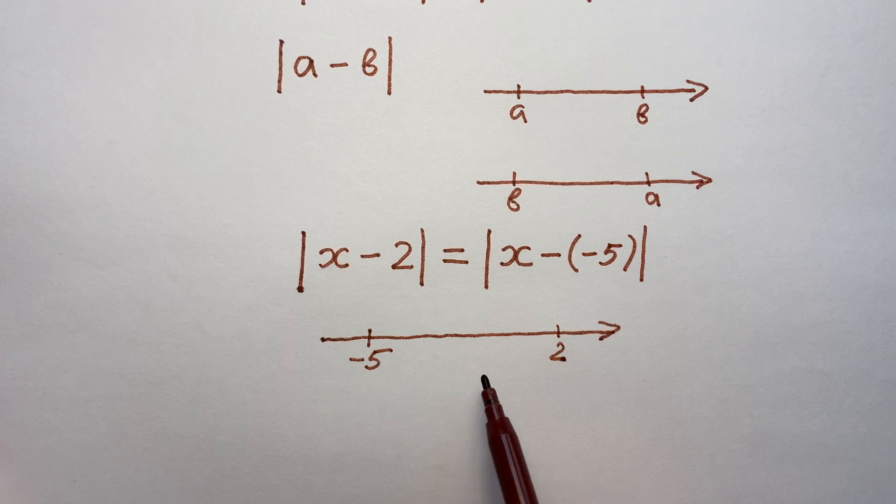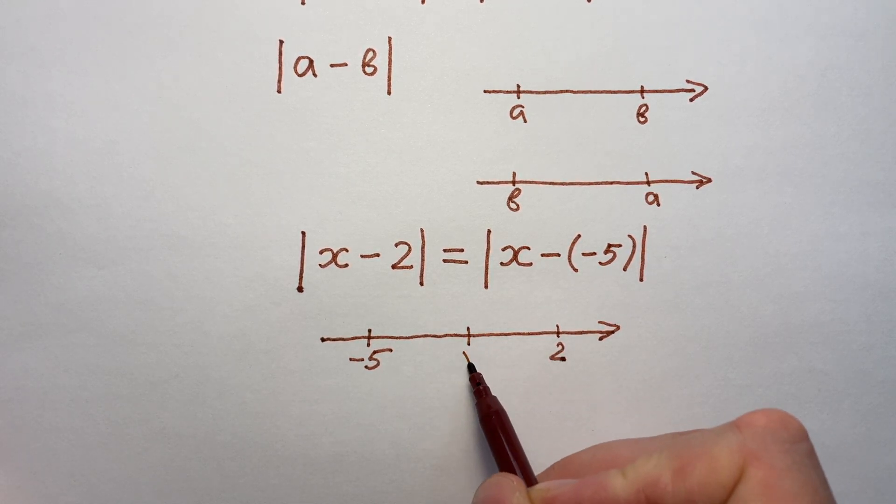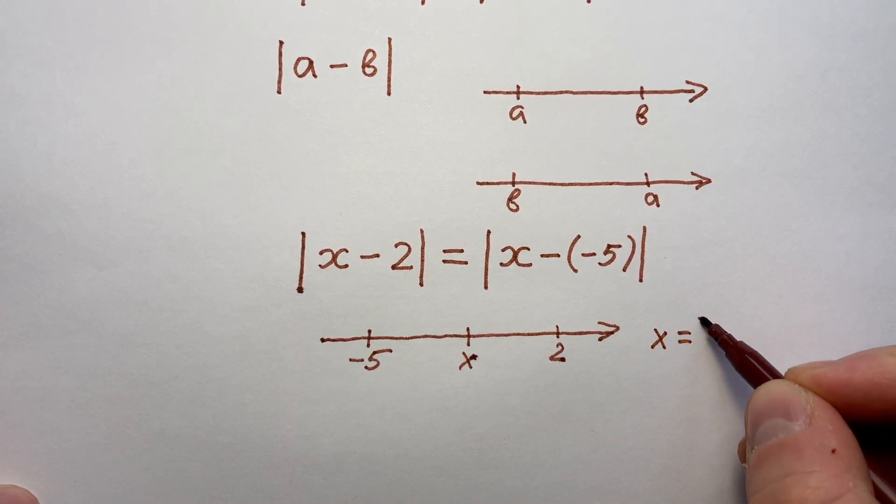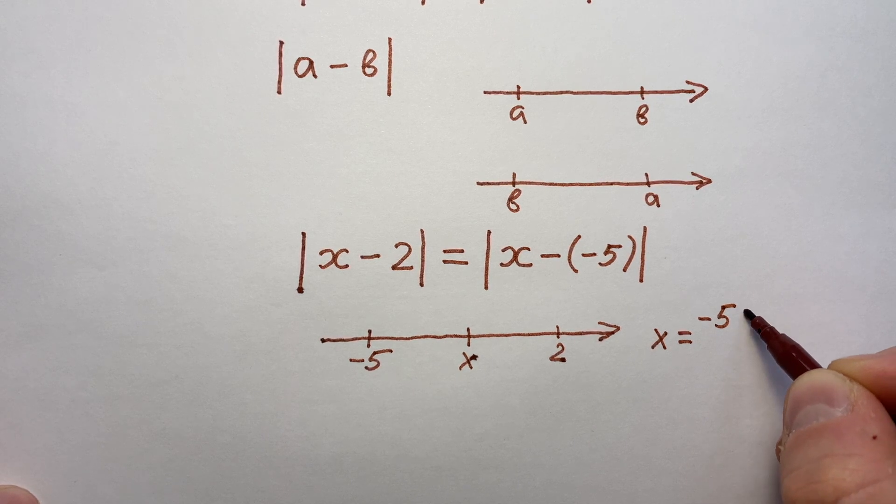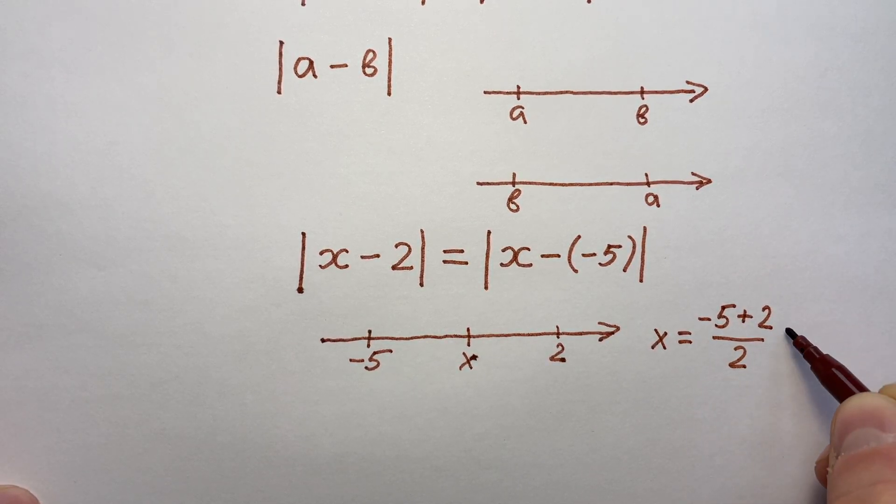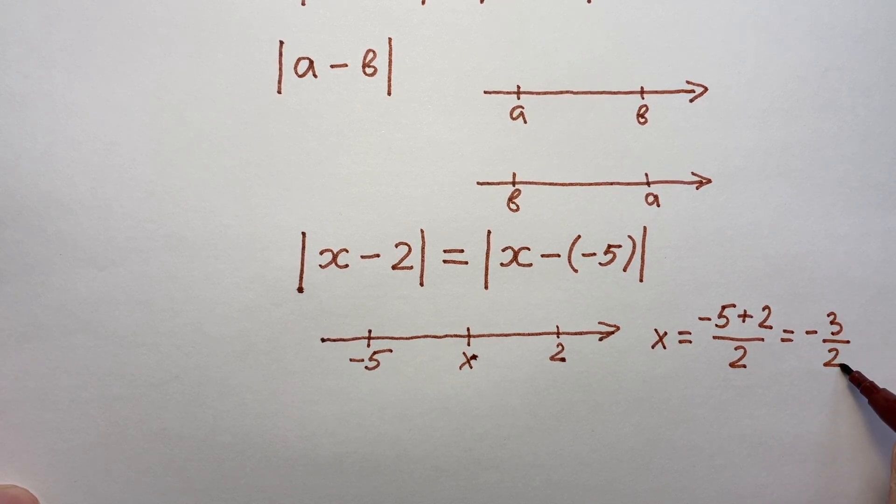It means that X should be equidistant between minus 5 and 2. And it's possible only in one way. If X lies in the middle between minus 5 and 2. So, X equals minus 5 plus 2 divided by 2, and it equals minus 3 divided by 2. Very cool.